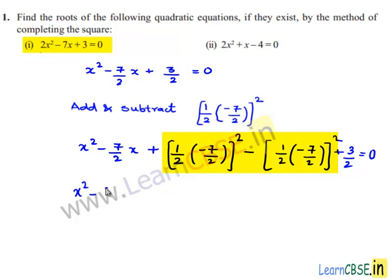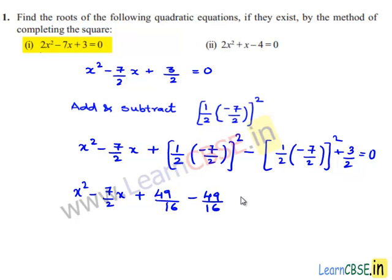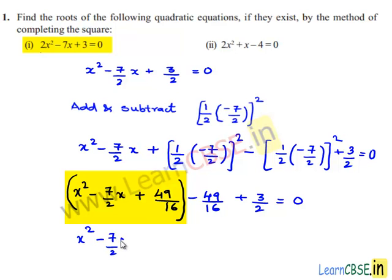So we get x² minus 7/2 x plus (minus 7/4)² minus (minus 7/4)² plus 3/2 is equal to 0. That is, (minus 7/4)² equals 49/16, giving x² minus 7/2 x plus 49/16 minus 49/16 plus 3/2 is equal to 0. Rearranging: x² minus 7/2 x plus 49/16 equals 49/16 minus 3/2.